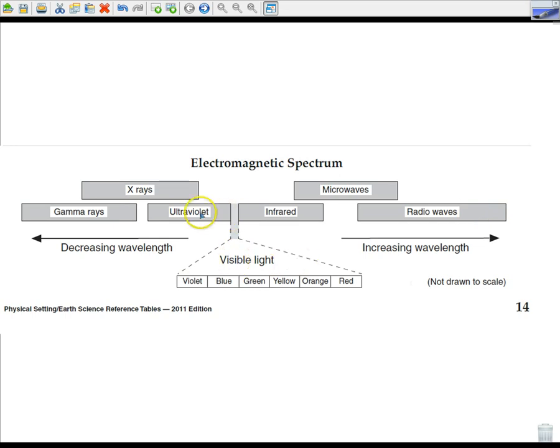In between ultraviolet and infrared, you have visible light. So all of the visible light - violet, blue, green, yellow, orange, and red - fit in this very, very small area. Ultra means above, so ultraviolet, above violet. Infra means below. Infrared, below red. So red would be a longer wavelength than blue and then violet.